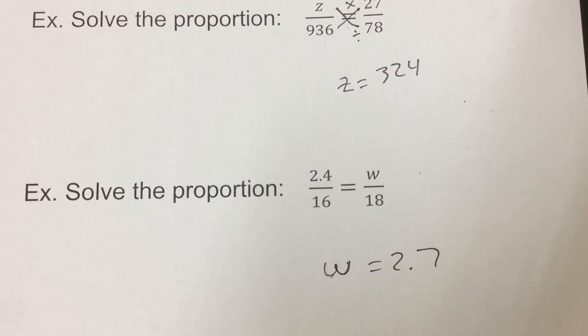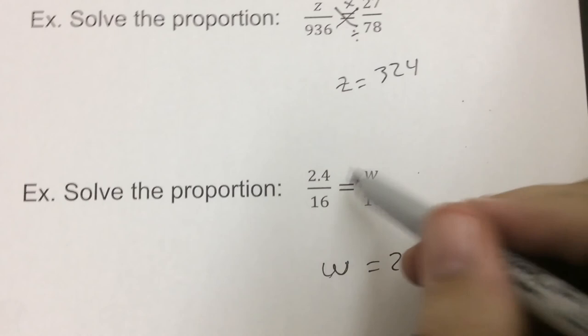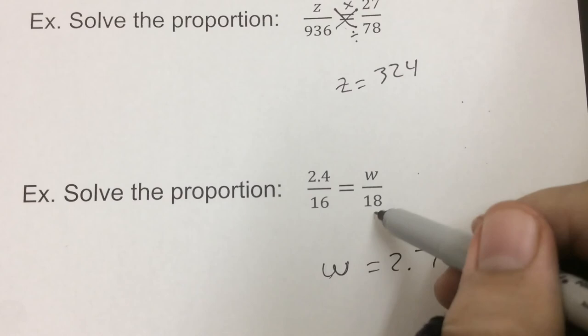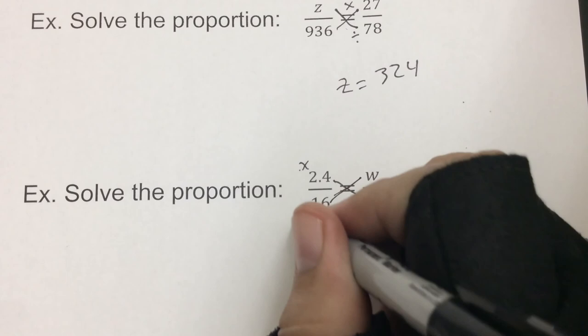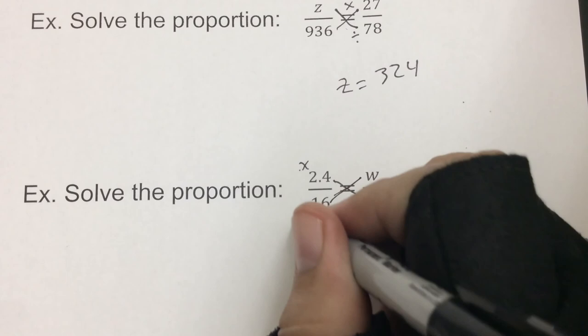So, proportions. Two ratios that we're going to say equal to each other. Now, we're going to use them as fractions. But, they're a ratio. So, times the two that are crossed, the two numbers crossed from each other. So, this one here would be times. This one here would divide. So, let me know if you have any questions. You can always email me, send me a message on Google Classroom. Otherwise, until next time, we'll talk to you later.